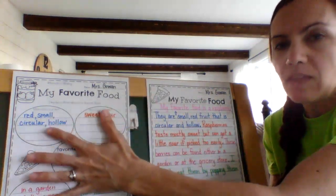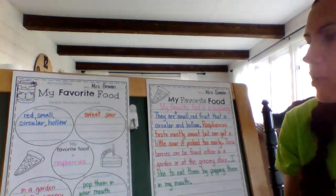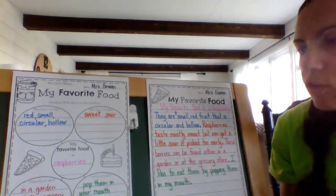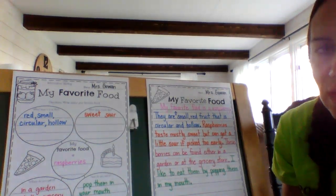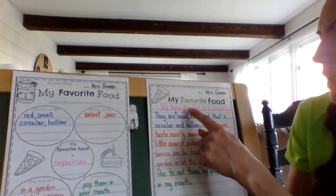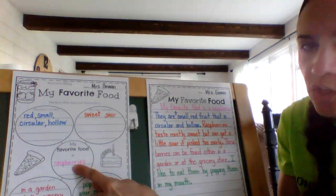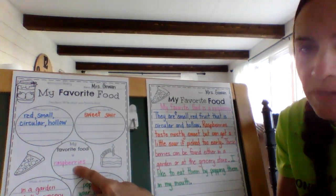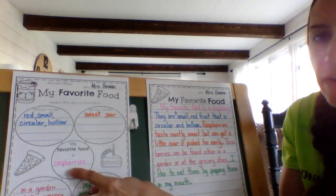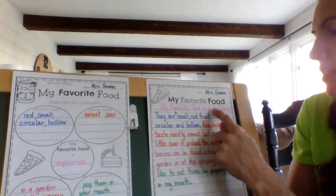We're going to make these into complete sentences and write them onto our final. I wanted to share what I did — I color-coded it so you could easily see which circles I was taking from. For my very first sentence, I'm taking from the very middle here. I'm going to tell you what my favorite food is, and it's a raspberry. So over here I'm going to say: my favorite food is a raspberry.